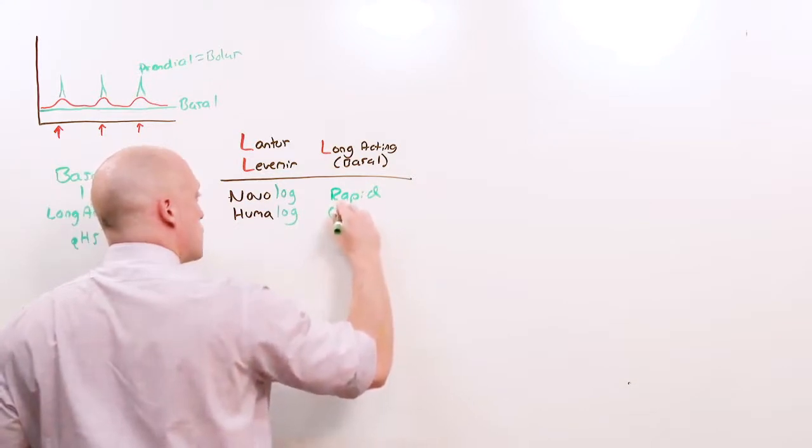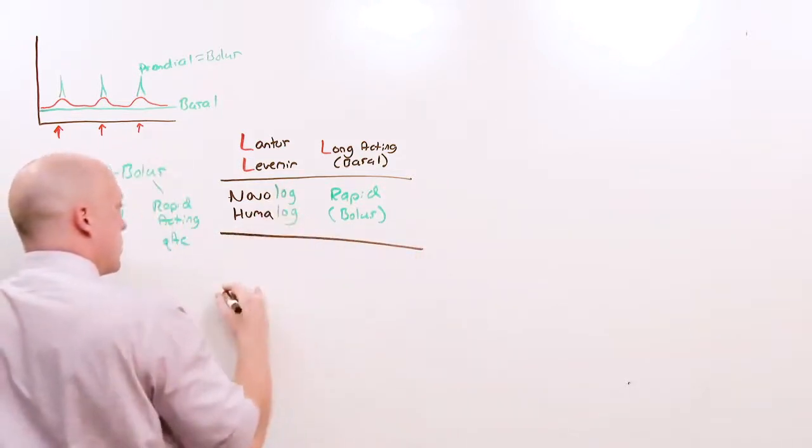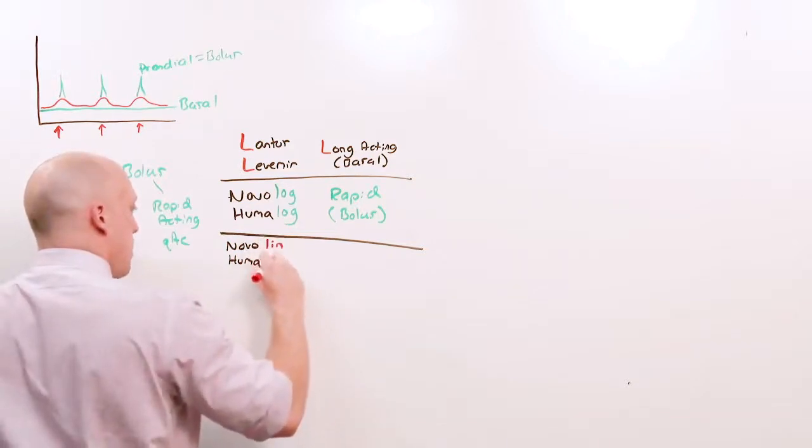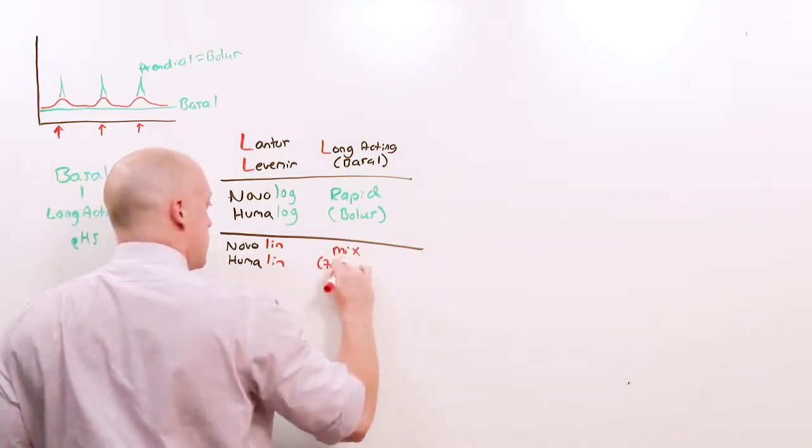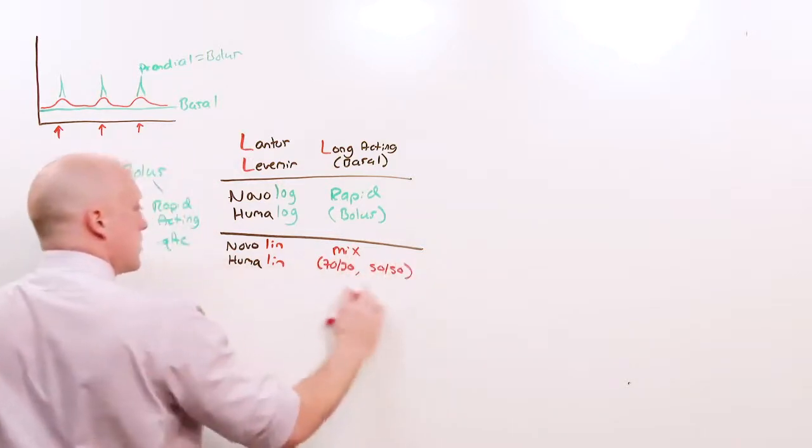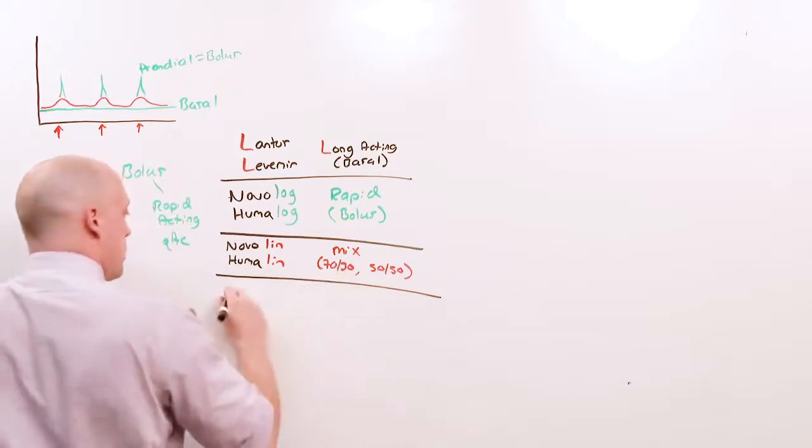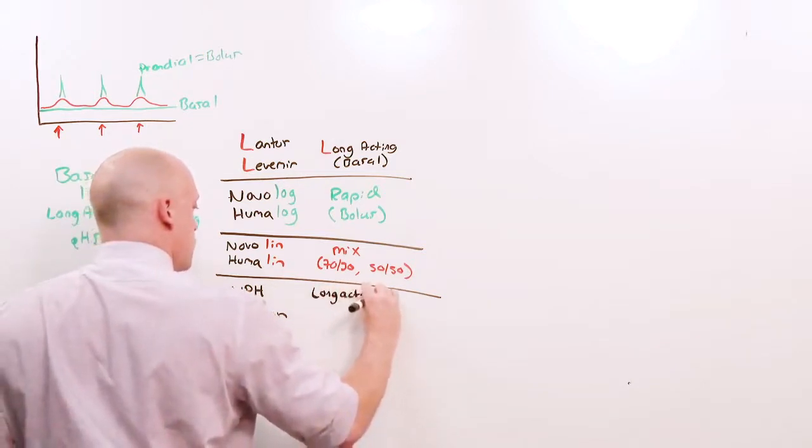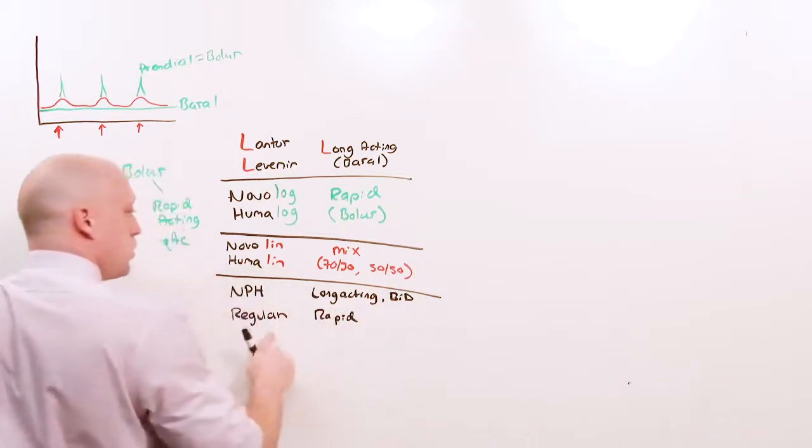These are your bolus insulins. Now, to make it very confusing, they've got the similar manufacturer names, but then they've added on a different suffix. Novo and Huma lin. These are generally going to be a mix, and you'll see 70-30 or 50-50. It's a mix of long-acting and short-acting insulin. It's actually a mix of NPH and regular insulin. NPH is the equivalent of long-acting, but because of the way it works, it has to be given twice a day, and regular insulin is rapid, but its half-life is really long and not physiologic.